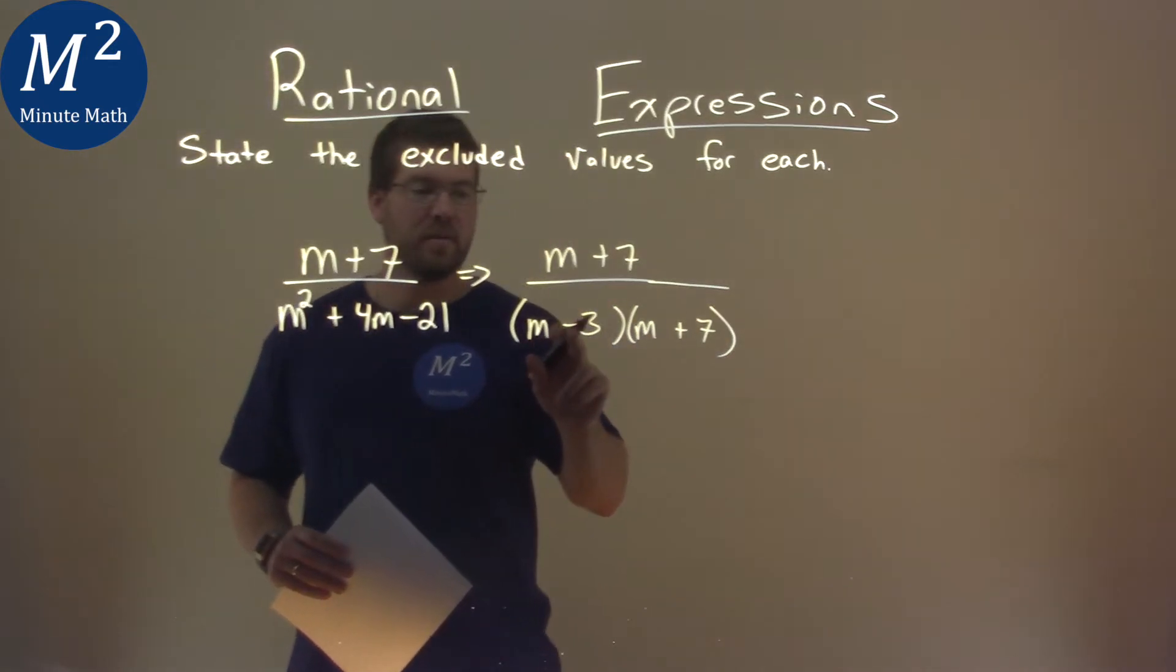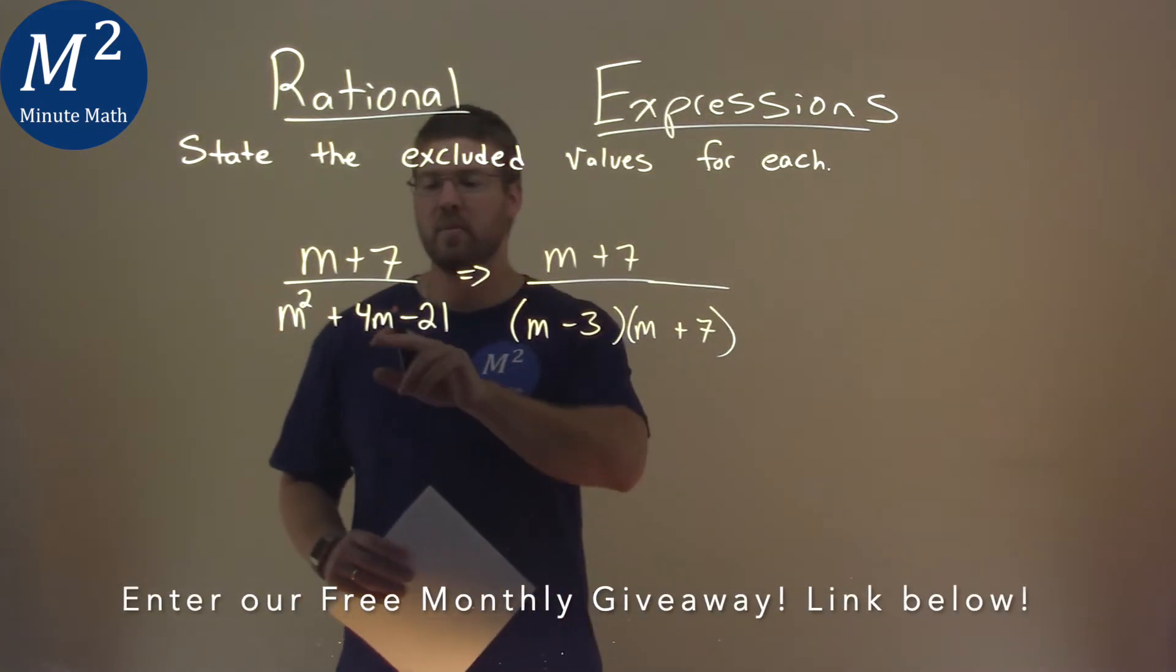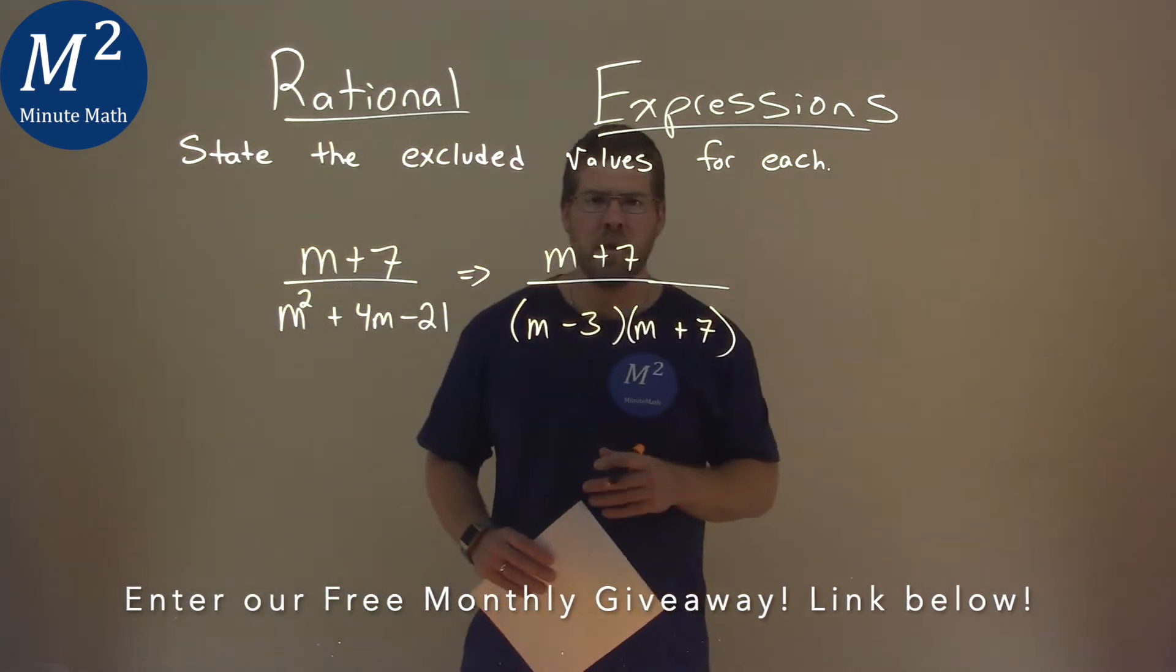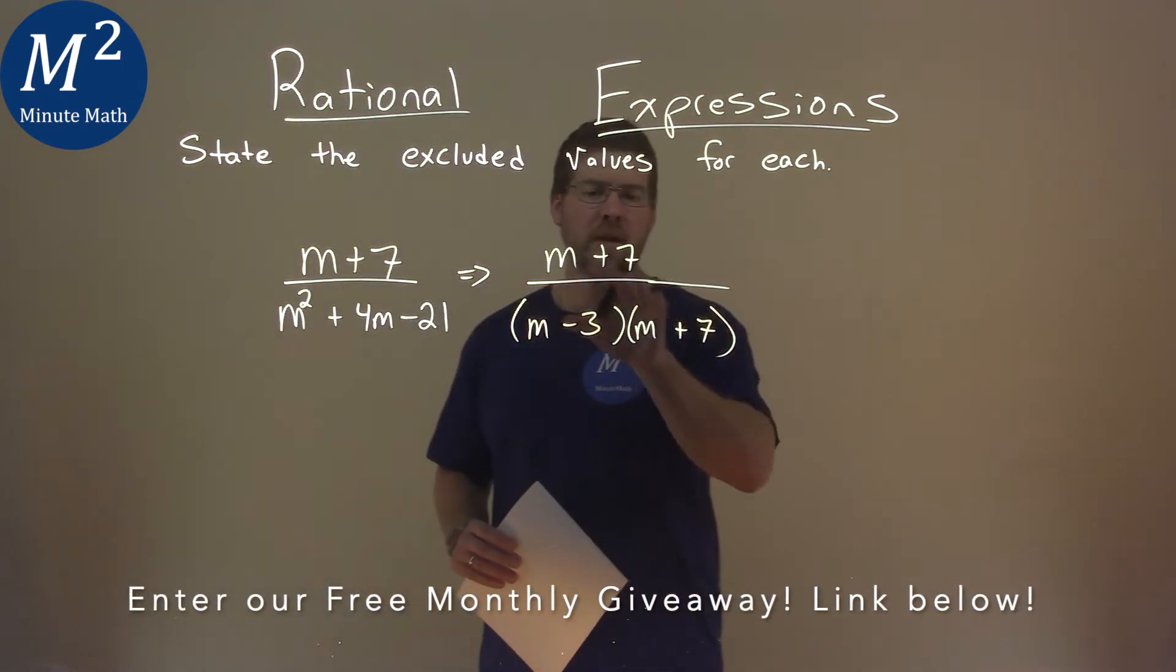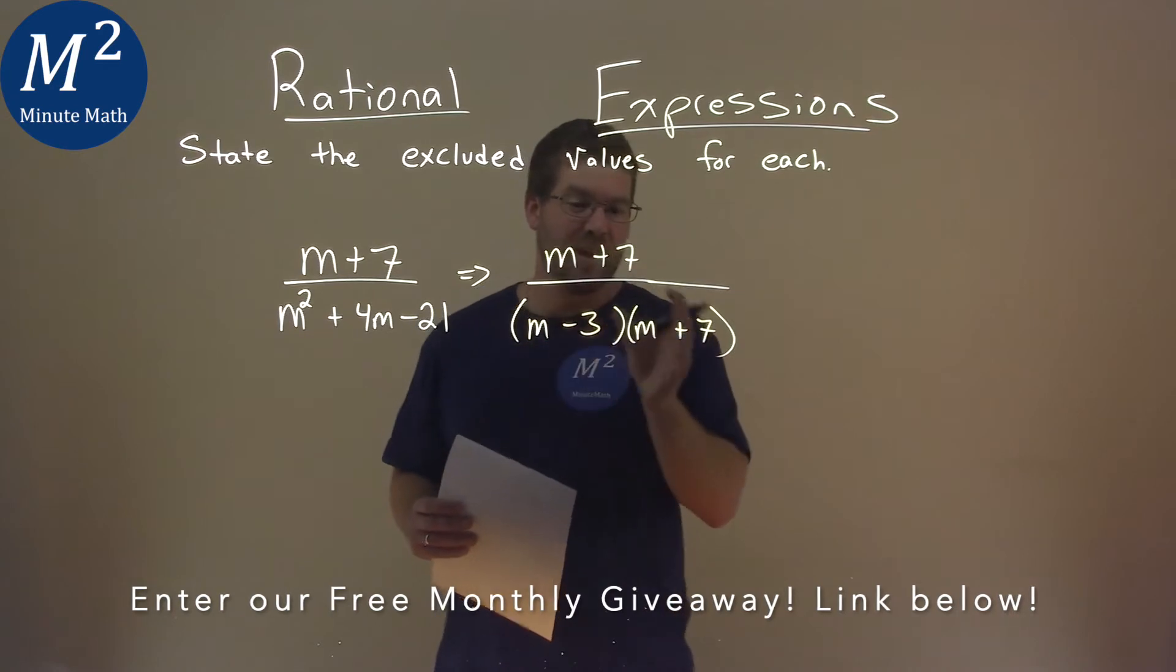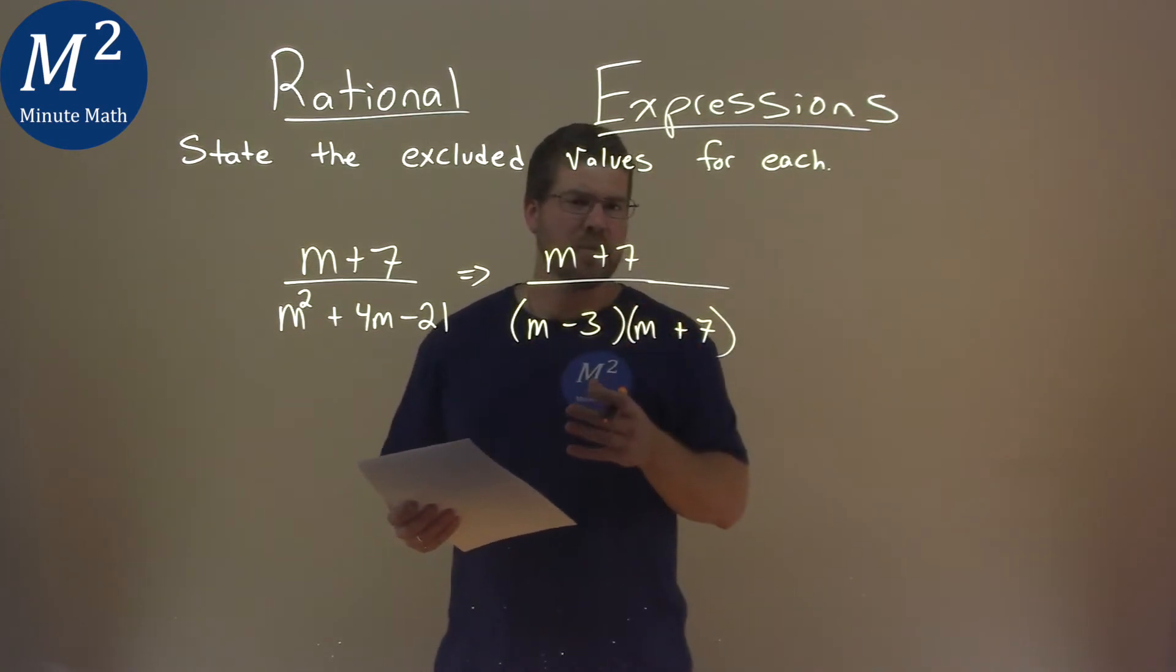Minus 3 times 7 is a negative 21, but when we add them, we get a positive 4. So now we have this denominator that's factored out, and we need to set it equal to 0.